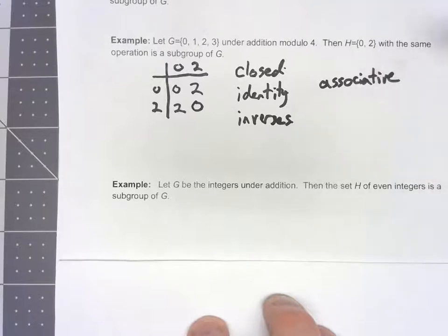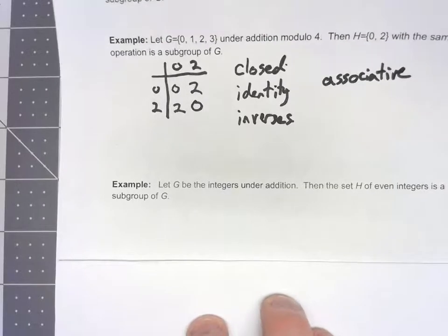Inverses? Yes. Because any time you've got an even integer, the opposite sign of that is also an even integer. And again, we can say it has associativity because it's just normal addition. We know normal addition is associative.